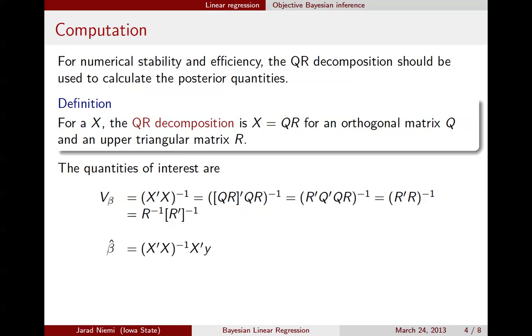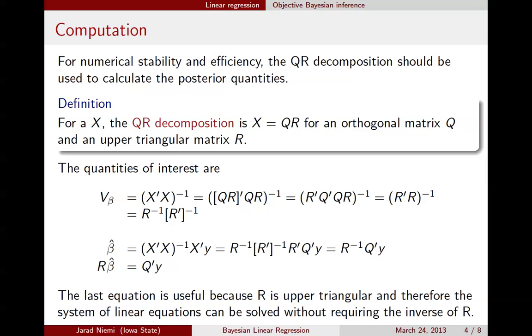The other quantity of interest is the estimator for beta. Same thing, plug in QR, noting that this variance here, this v_beta is just this quantity right there, so we've already got that computed. And now we have R prime inverse R prime, which is just the identity. So we have that relationship. If we multiply both sides by R, we get this linear system of equations. It turns out this will be computationally convenient because there are good solvers for this system of linear equations for the upper triangular matrix R.